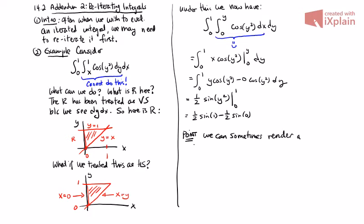Now again this is very rare, but we can sometimes render a seemingly impossible iterated integral possible by changing between a vertically simple, horizontally simple, or even polar.